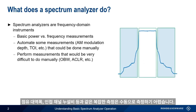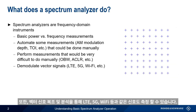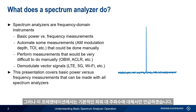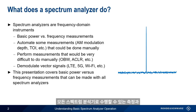Other measurements, like occupied bandwidth, adjacent channel leakage ratio, etc., would be difficult or impossible to manually measure. Vector signal demodulation and analysis allow us to look into the structure and content of signals like LTE, 5G, Wi-Fi, etc. In this presentation, however, we're going to limit ourselves to the basic power versus frequency measurements that can be made with any spectrum analyzer, and what you learn here will apply to just about every make and model.